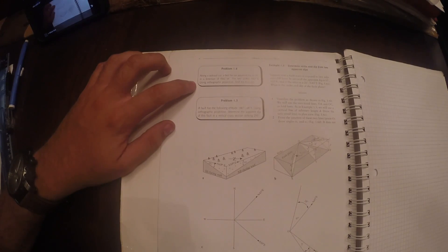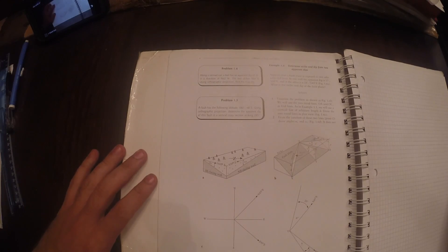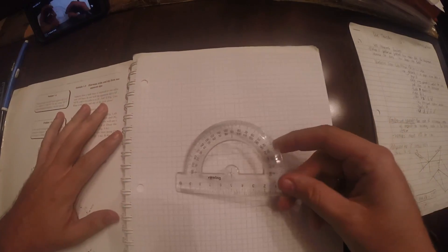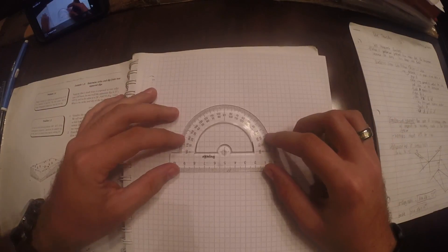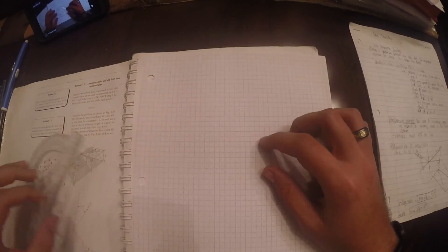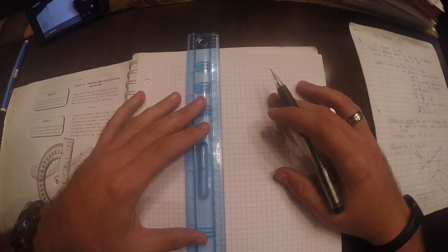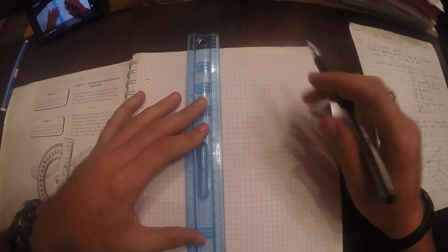Use orthographic projection to find the true dip, so they give us the apparent dip. So, got mine there, so you'll need a protractor. Okay, so begin with north, south, east, west.